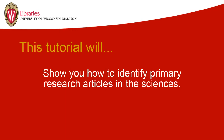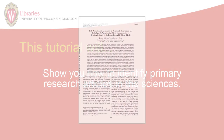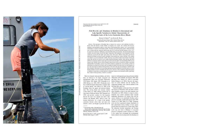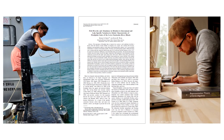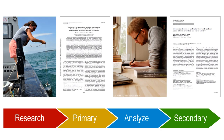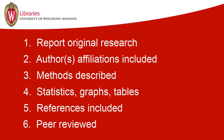This tutorial will show you how to identify primary research articles in the sciences. Primary research articles are written by the scientists who actually conducted the research or ran the experiment in order to communicate their discoveries to other scientists. Another scientist may then analyze or summarize the information from the primary research article, creating a secondary source, like a review article or meta-analysis. The following characteristics can help you determine if the article you're looking at is primary research.